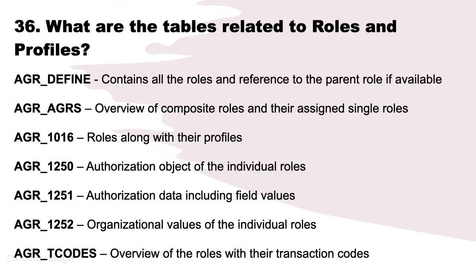What are the tables related to roles and profiles? AGR_DEFINE contains all the roles and reference to the parent role if available. AGR_AGRS gives an overview of composite roles and their assigned single roles. AGR_1016 contains roles along with their profiles. AGR_1250 contains authorization objects of the individual roles. AGR_1251 contains authorization data including field values. AGR_1252 provides information about organizational values of individual roles. AGR_TCODES contains an overview of roles with their transaction codes.